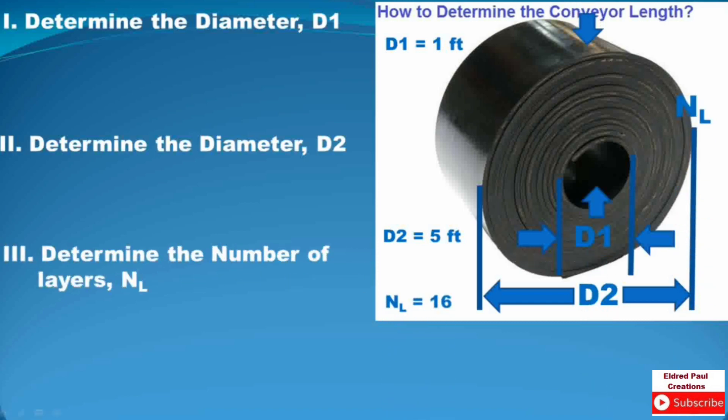Next, determine the number of layers NL. Based on the arrow, it is where you measure the number of layers NL. So by counting: 1, 2, 3, 4, 5, 6, 7, 8, 9, 10, 11, 12, 13, 14, 15, 16. Based on my counting, NL equals to 16, so number of layers equals to 16.